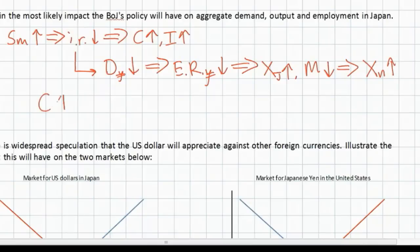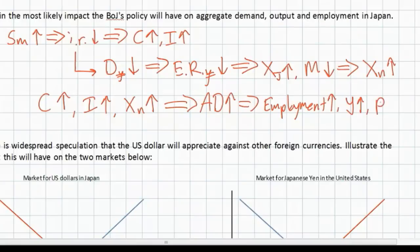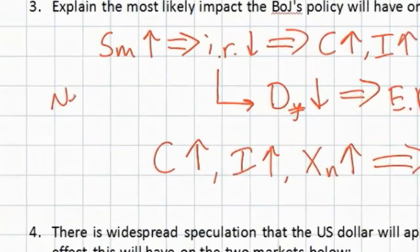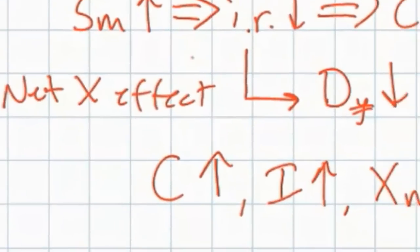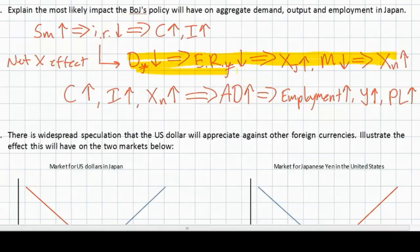As exports increase and imports decrease, net exports increase. Consumption has increased, investment has increased, and net exports have all increased in Japan — all components of aggregate demand. The increase in aggregate demand resulting from the expansionary monetary policy will lead to more employment for Japanese workers, a greater level of national income in Japan, and a higher price level. The expansionary monetary policy not only contributed to domestic consumption and investment, but through the net export effect ultimately leads to an increase in Japan's net exports, further reinforcing the Bank of Japan's expansionary monetary policy.